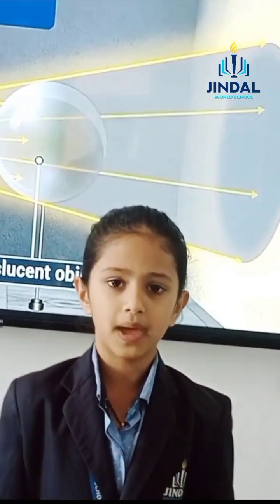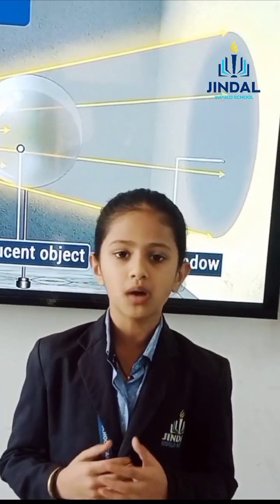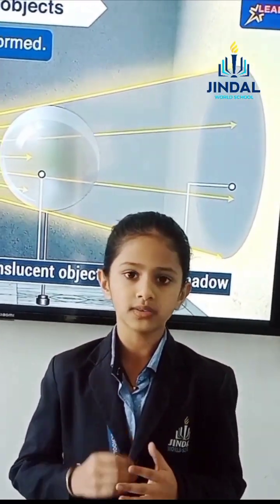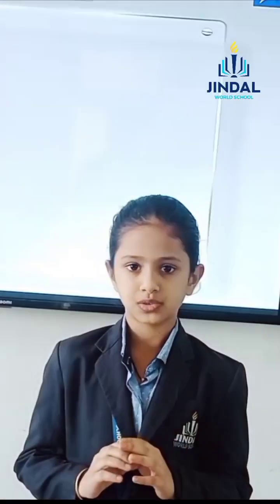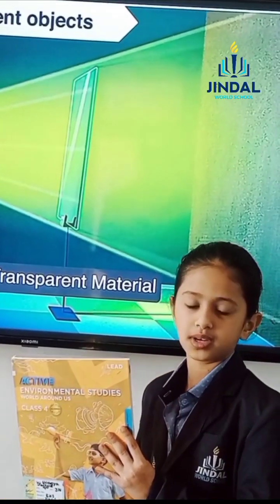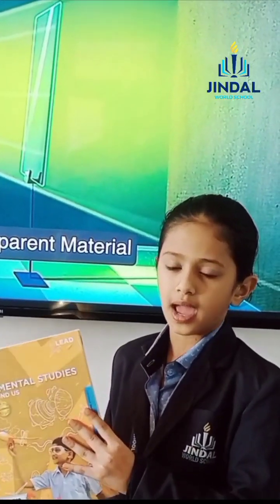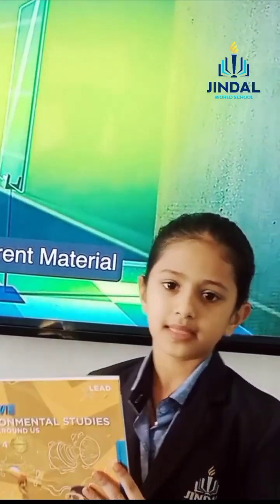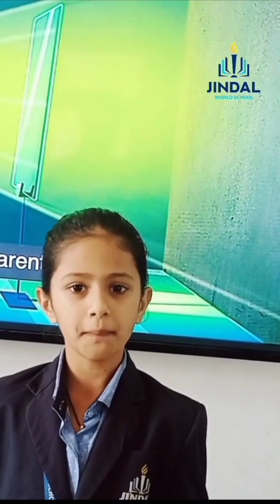And the last one — opaque. Opaque objects are the objects that allow no light to pass through them. Can you see any light here? No, you cannot see any light here.